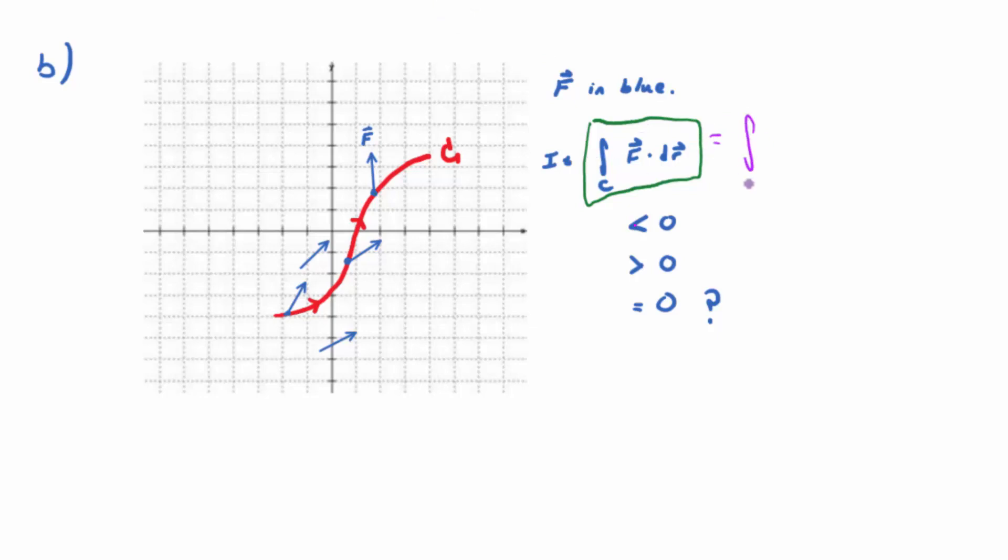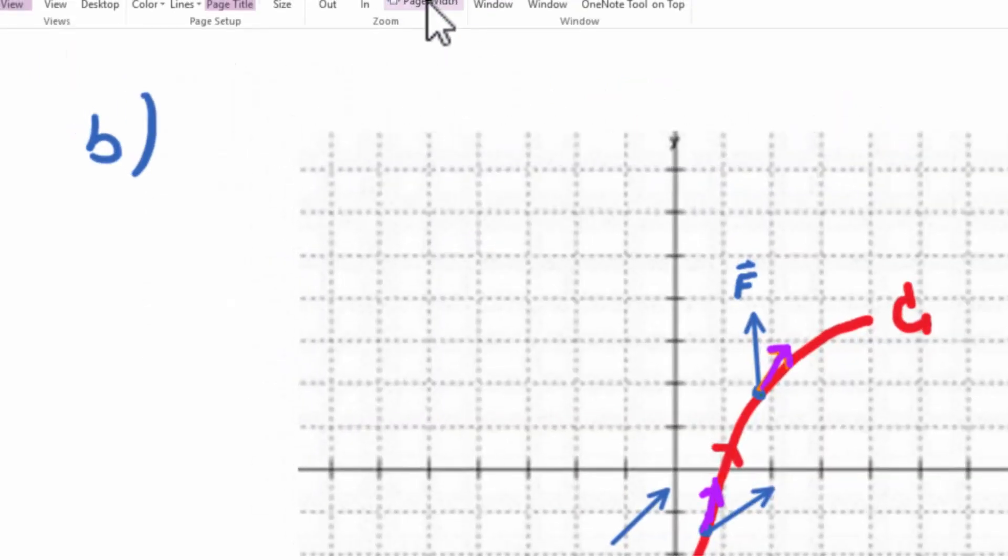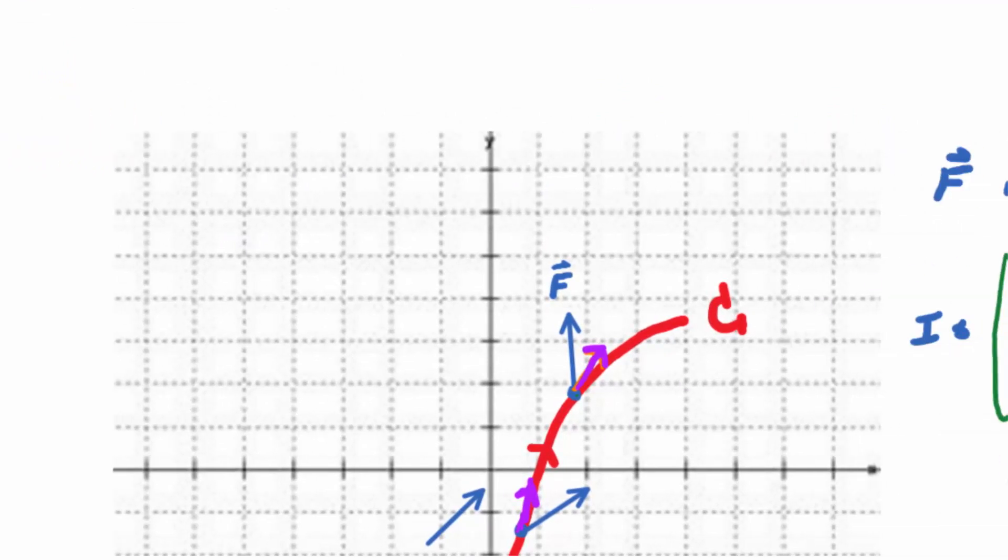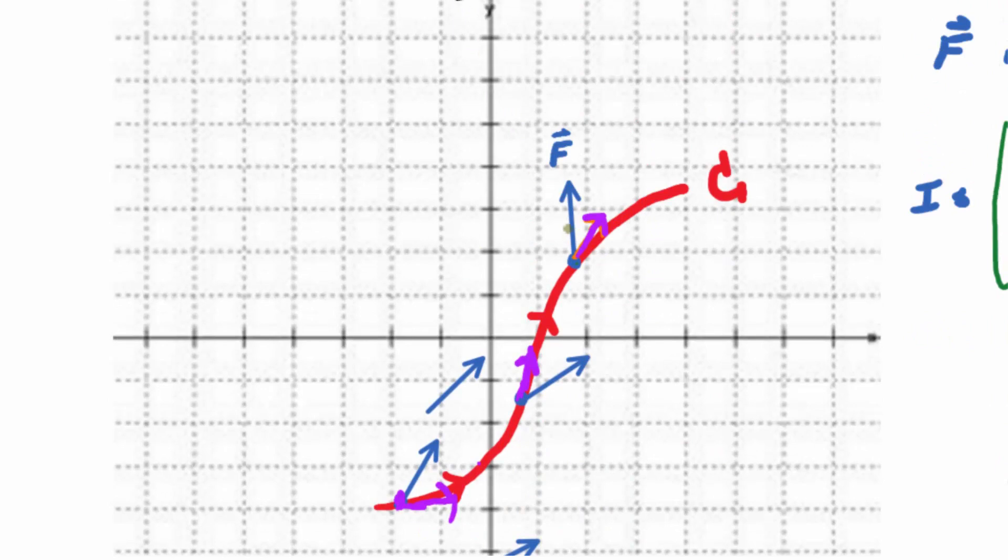This is how I need you guys to think. This integral, the original way we presented it was F dot T DS. Think in terms of T. What would T look like here? Or what would it look like here? What would it look like here? It would maybe be like that.